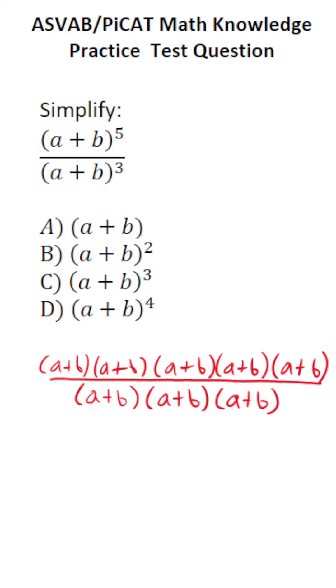you can cross out corresponding values in your numerator and denominator. So I'm going to cross out this pair of (a + b), this pair of (a + b), and this pair of (a + b).